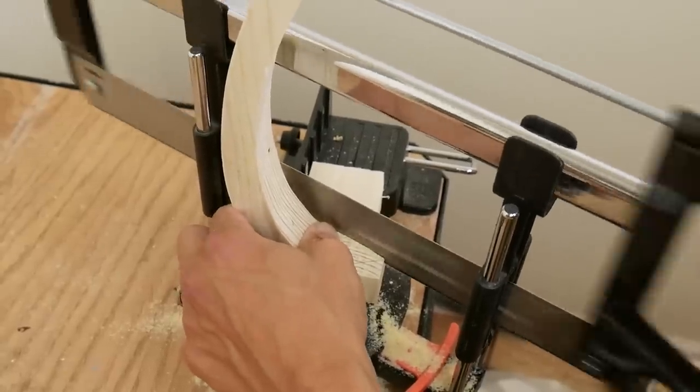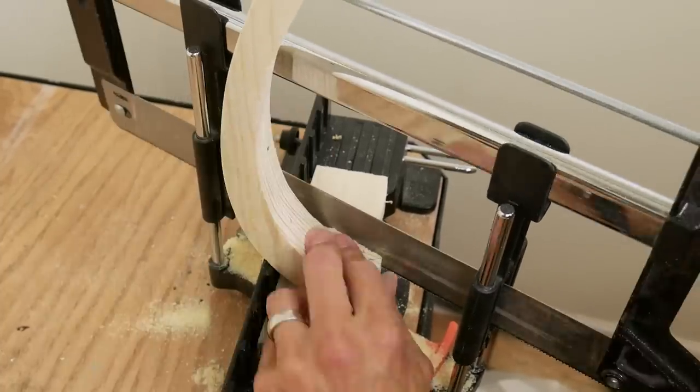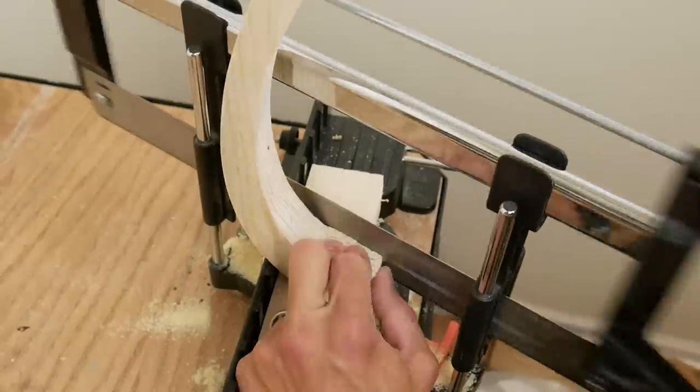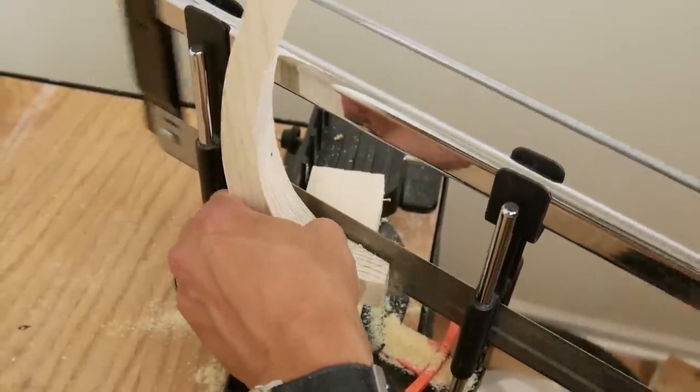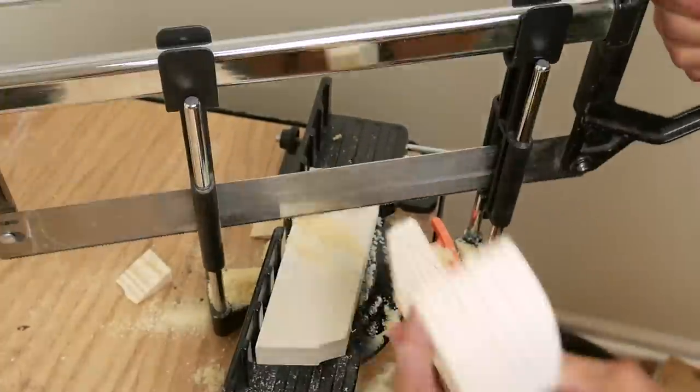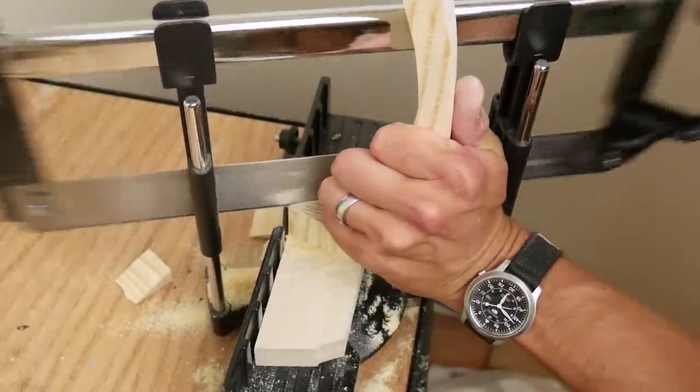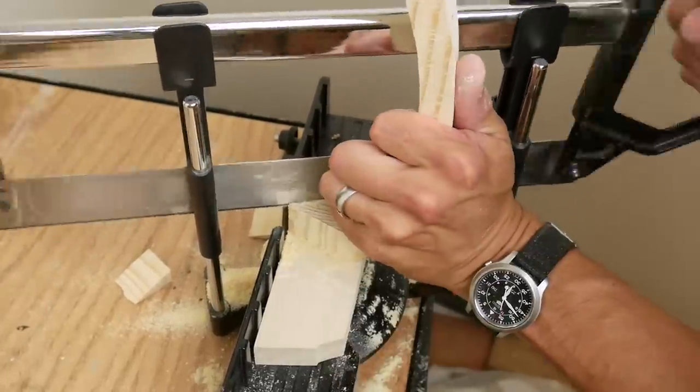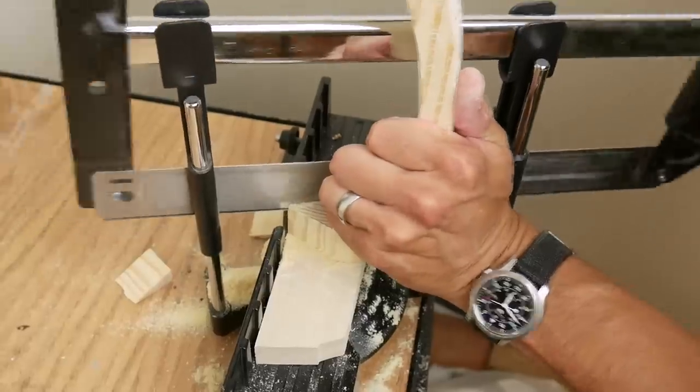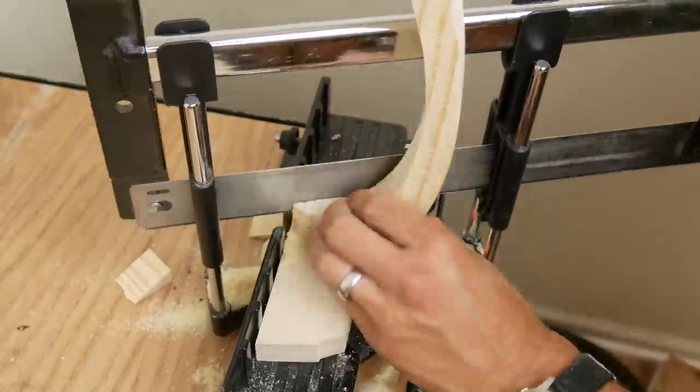I used a miter saw to cut these wedges on all eight ribs. This was kind of a pain in the butt, but it was the only way I could think of doing it with the tools I have.